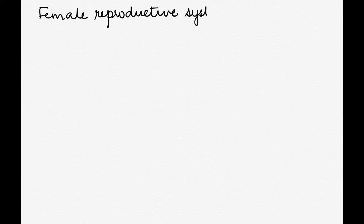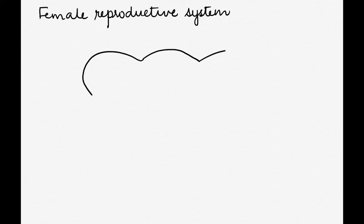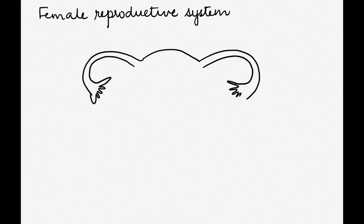In this video I will be explaining the female reproductive system and we'll also see how to draw it. We begin with drawing the upper part, extending it to form the fallopian tube and the tip of the fallopian tube to show projections that are called fimbriae.